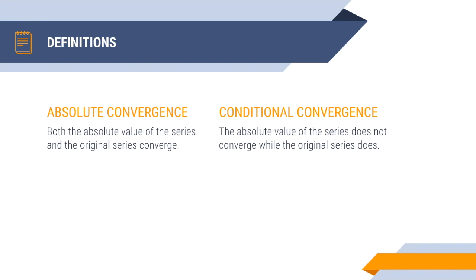Absolute convergence is when both the absolute value of the series and the original series both converge. Conditional convergence is when the original series does converge, but the absolute value of it does not.